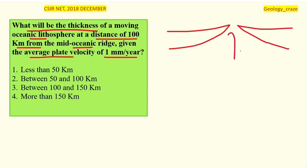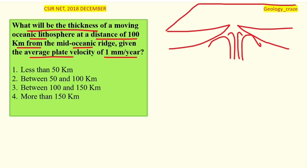Here, convection currents will come up and new plate is created. In 3D, the mid-oceanic ridge is formed here. As the plate moves, the thickness of the oceanic crust increases with the passage of time as it spreads away from the mid-oceanic ridge, where the new plate is created.